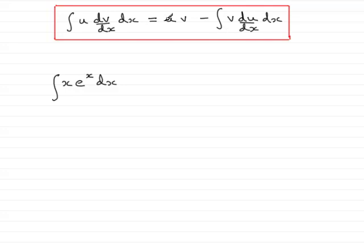minus the integral of what you've just integrated, that's the v part, multiplied by du/dx, that's the differential of the first part.